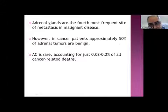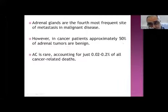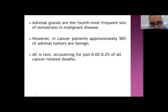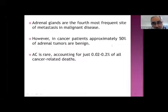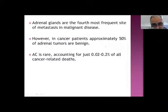Hence the importance of doing FNA of suprarenal masses in the presence of a primary tumor like pancreatic or lung cancer. If proved metastatic, this will change the line of management from resectable to palliative therapy. But if the mass is proved benign — like cortical adenoma — and the primary mass is resectable, we can go for radical surgery aiming at cure. Not every suprarenal mass in the presence of a primary pancreatic tumor is necessarily malignant; it carries only a 50 percent liability.